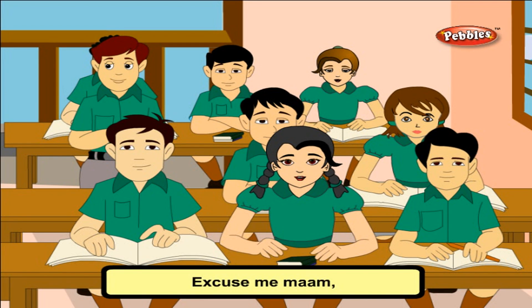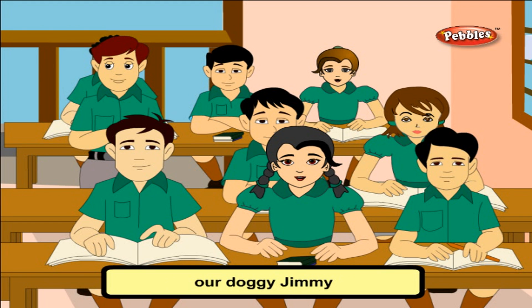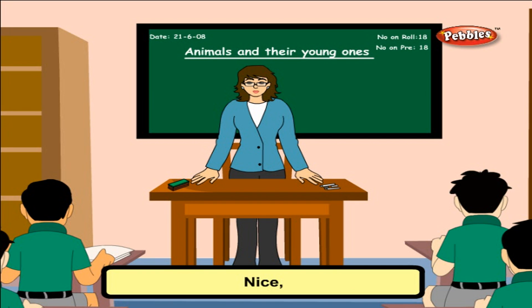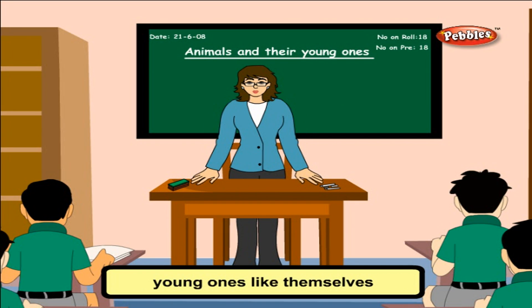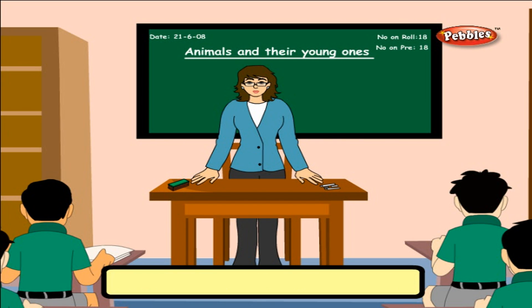Yesterday our doggy Jimmy gave birth to four pups. All living things are able to produce young ones like themselves. This process is called reproduction. Here are some examples.